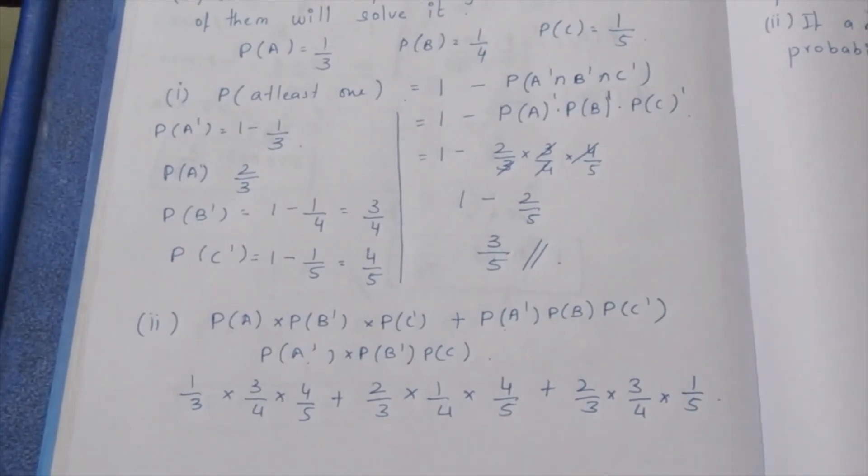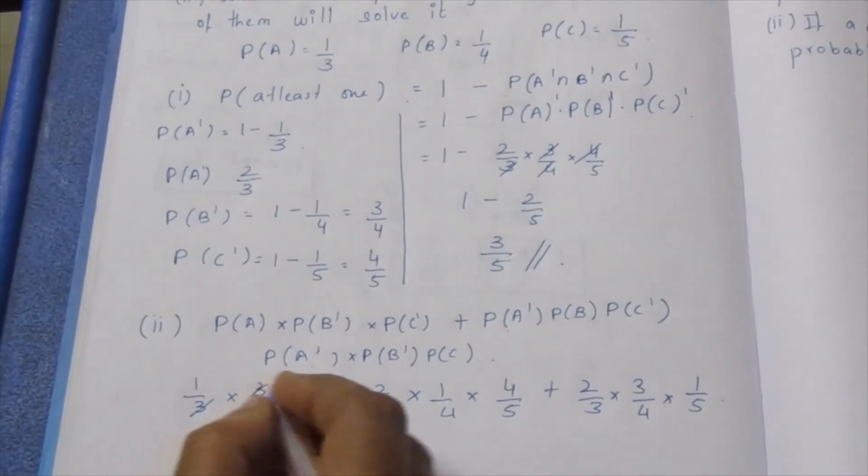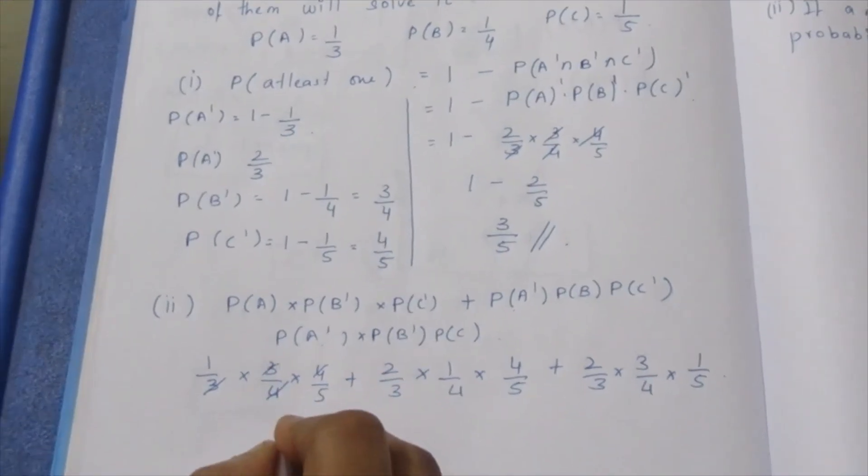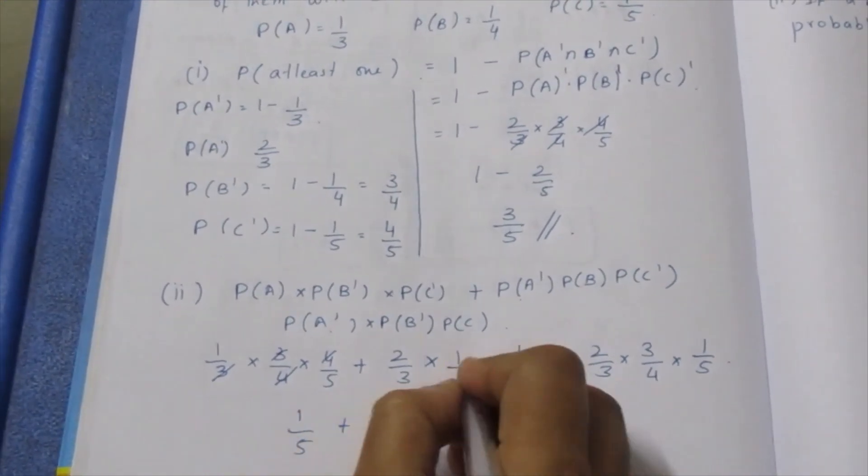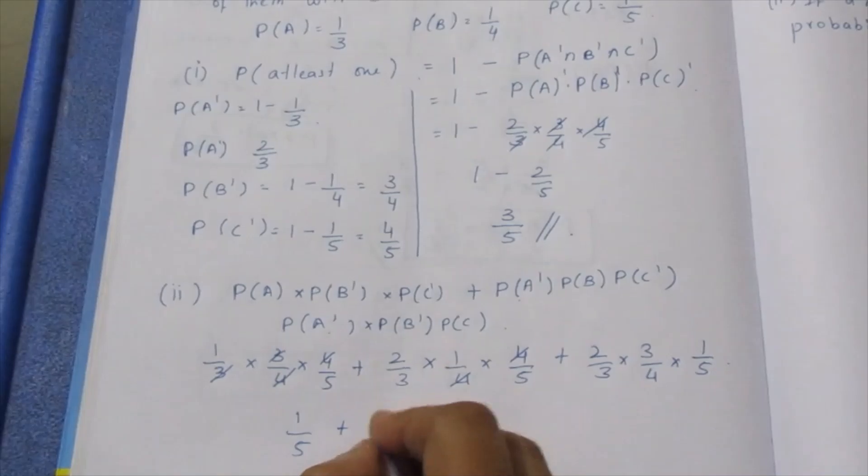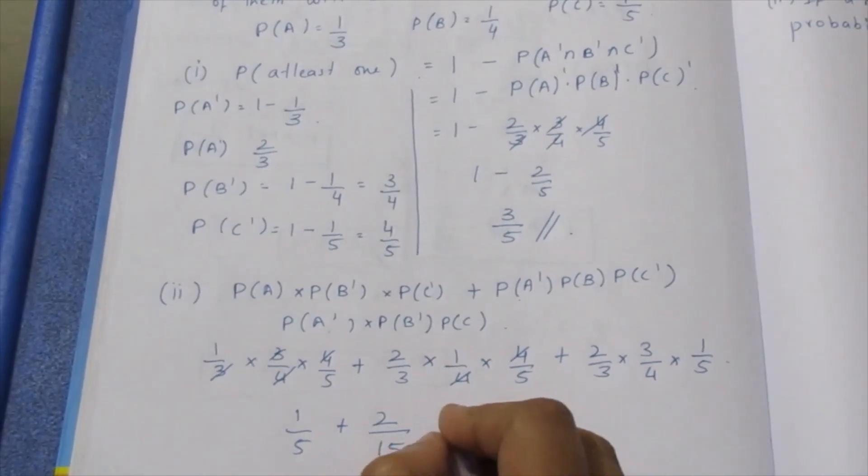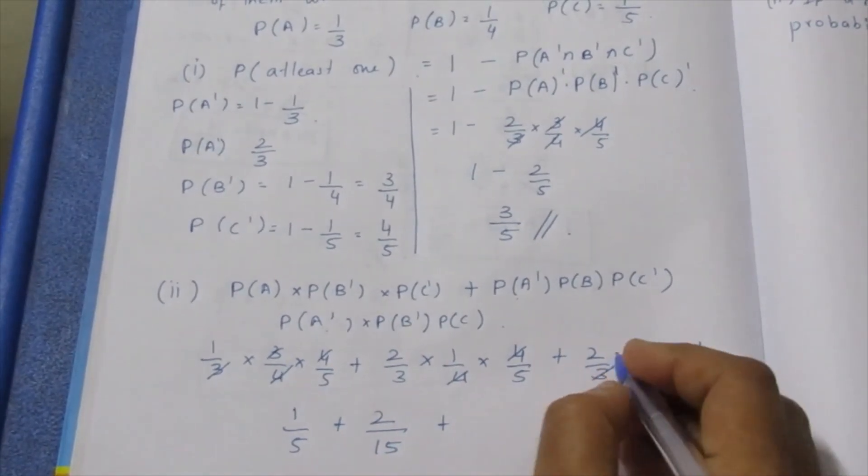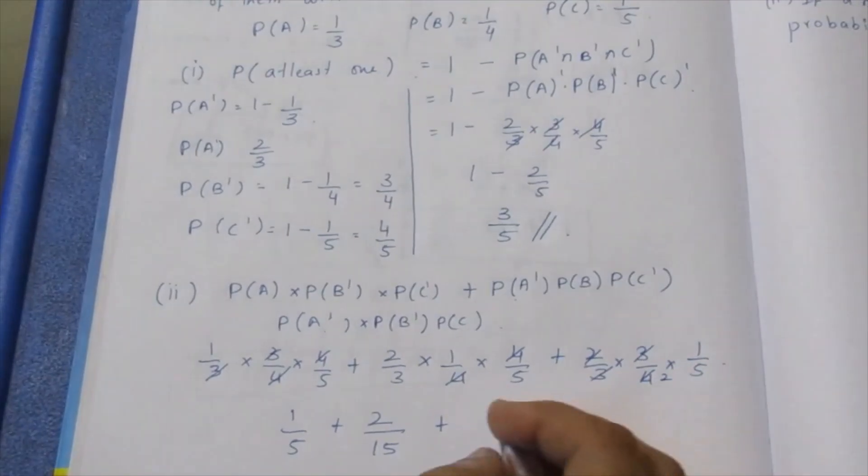This is the second sum of the answer. 3, 3 cancel, 4, 4 cancel, answer 1 by 5, plus 4, 4 cancel, so 2 by 15, plus 3, 3 cancel, 2 by 4, so 1 by 10.